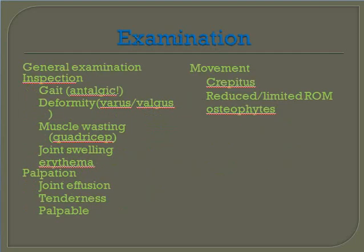Examination includes general examination. On inspection: look for gout, deformity, muscle wasting, joint swelling, and erythema. On palpation: joint effusion, tenderness, and palpable osteophytes. Assess for crepitus, reduced and limited range of motion, and osteophytes.